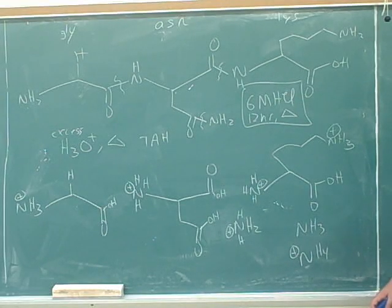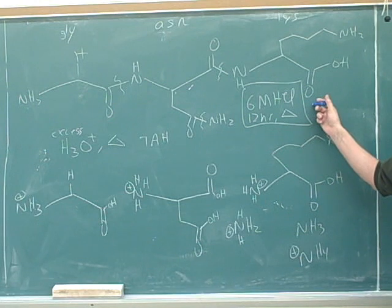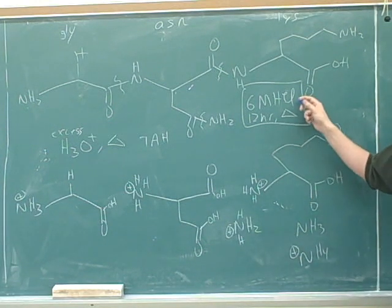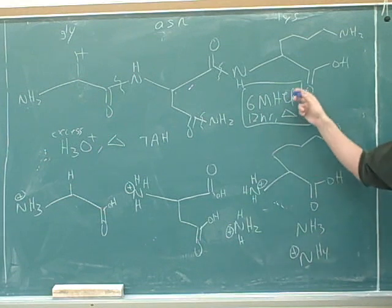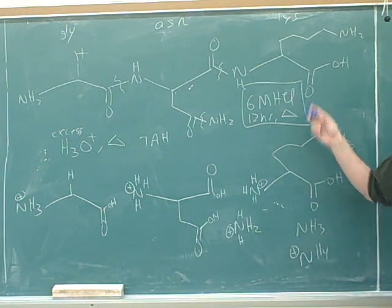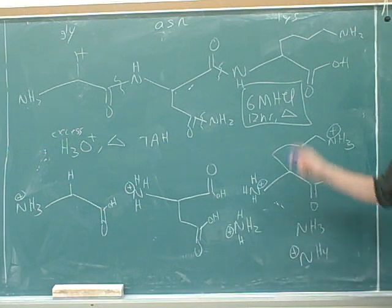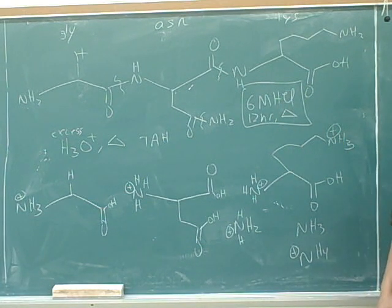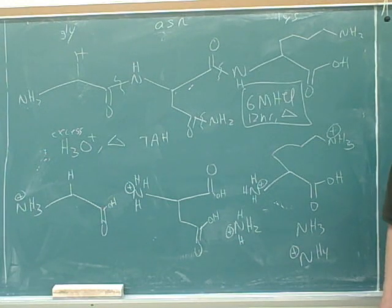You're likely to see this as part of a big protein problem, or you could see this as just a single predict-the-products problem. Notice this doesn't have to be used on a normal amino acid — you could do total acid hydrolysis on anything, as long as it has hydrolyzable bonds. So it could be used on a normal peptide, or even an ester, anything that could be hydrolyzed.